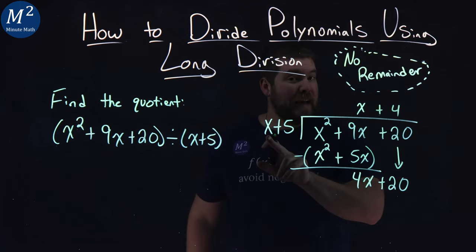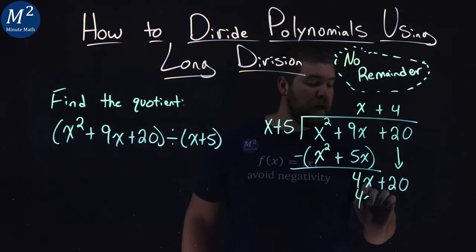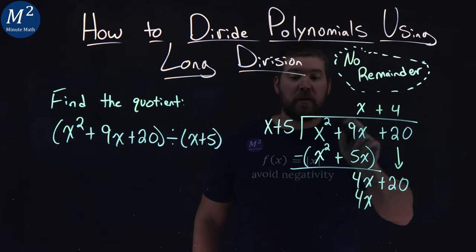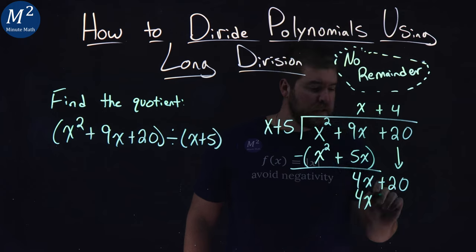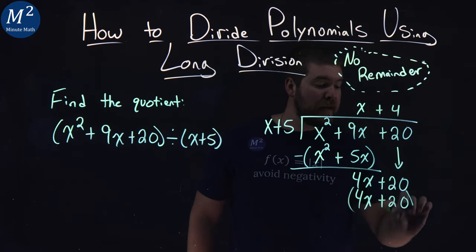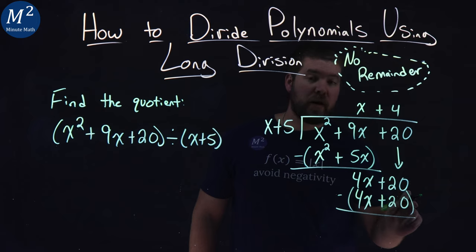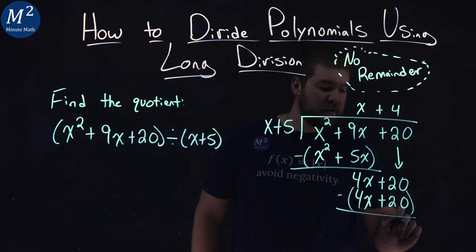4 times x gives me 4x. Continue on. 4 times 5 is 20. Now we want to subtract the top and bottom here. 4x minus 4x, that's 0. And 20 minus 20 is 0.